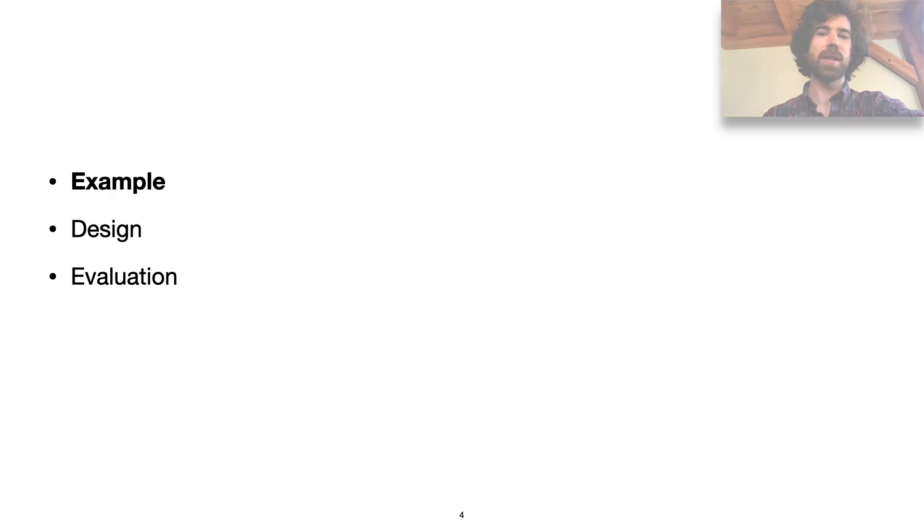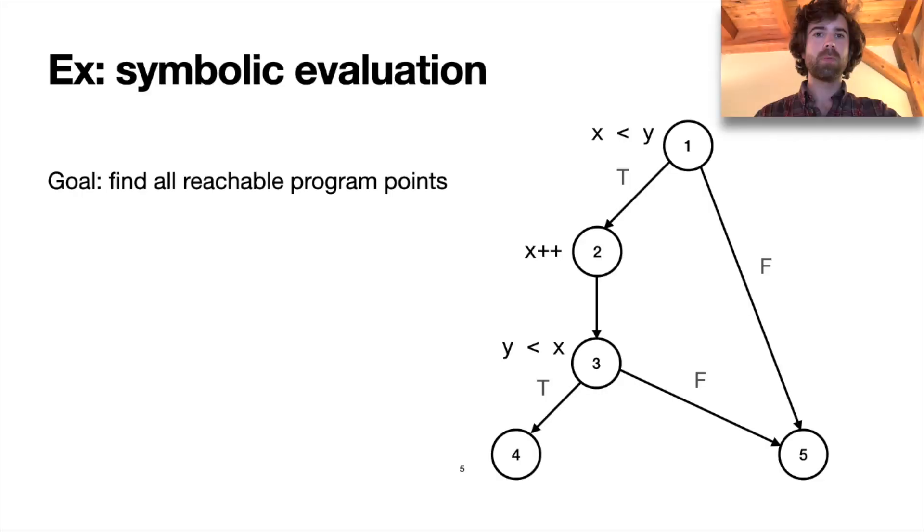Let's look at this example. We're going to build a symbolic evaluator for control flow graphs of a simple imperative language like the graph on this slide. And our evaluator is going to try to determine all of the nodes in the graph that are reachable. In this case they're all reachable except for the node labeled 4 because the path leading to 4 is not actually feasible if you look at the constraints along that path.